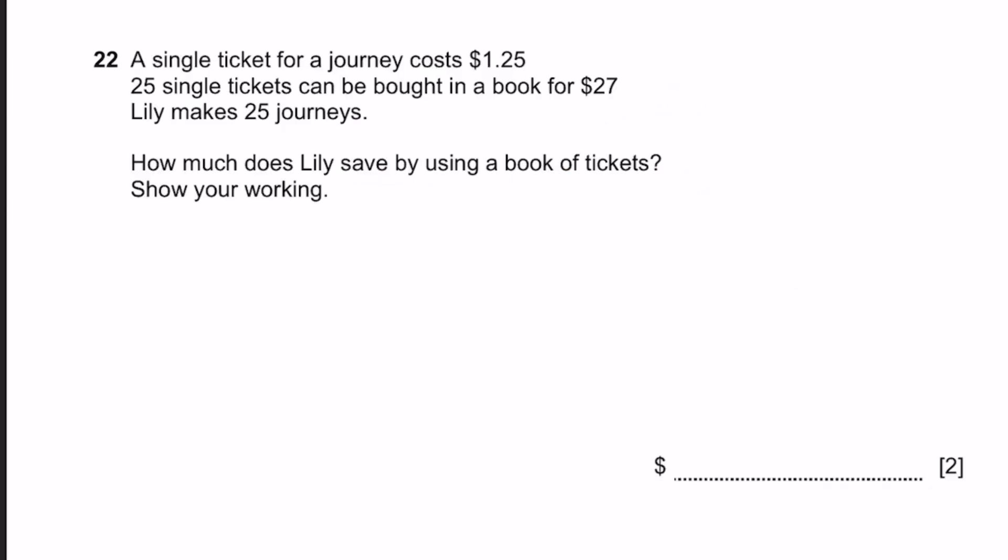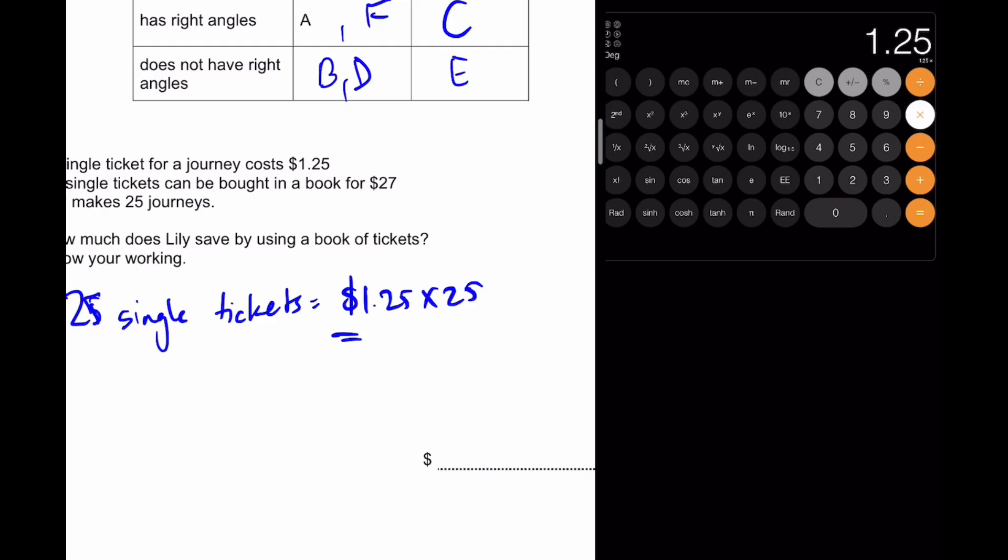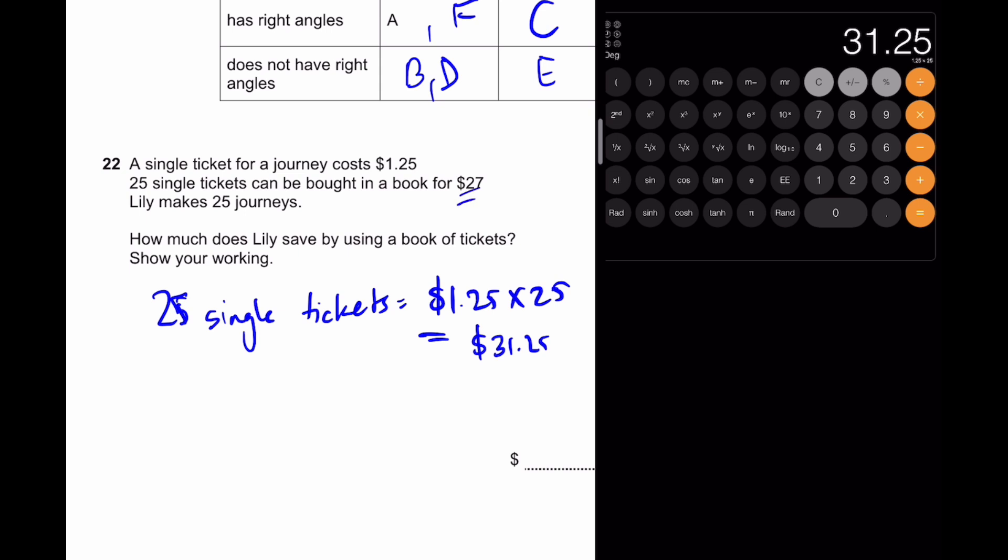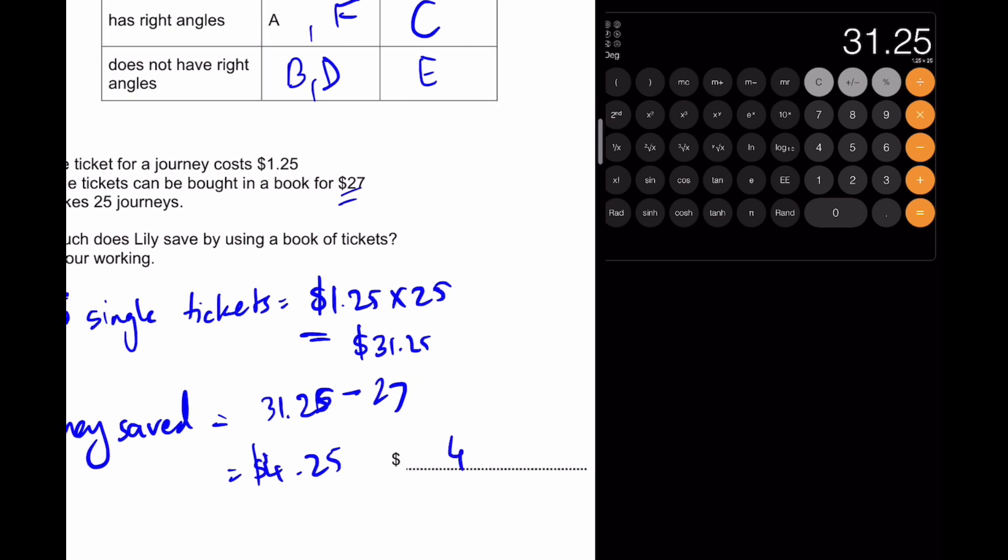Question 22. A single ticket for a journey costs $1.25. 25 single tickets could be bought in a book for $27. Lily makes 25 journeys. How much does Lily save by using a book of tickets? Show your working. So the cost of 25 single tickets is equal to 1.25 into 25, which is equal to, let's get our calculator out, $31.25. So it can be bought in a book for $27. So money saved is equal to $31.25 minus 27, which is equal to $4.25. That's the answer.